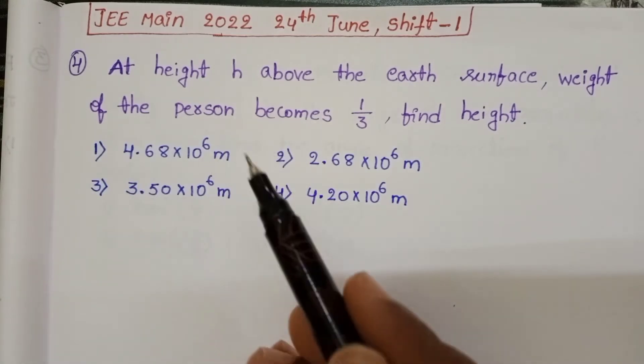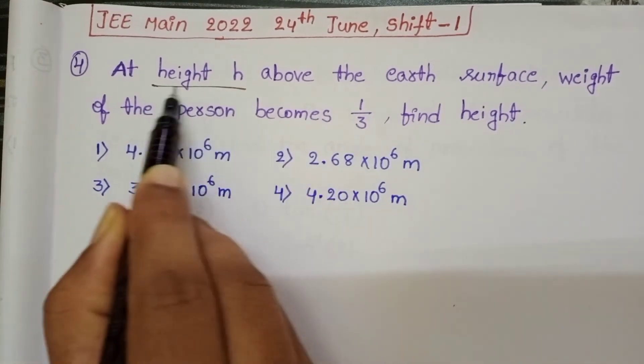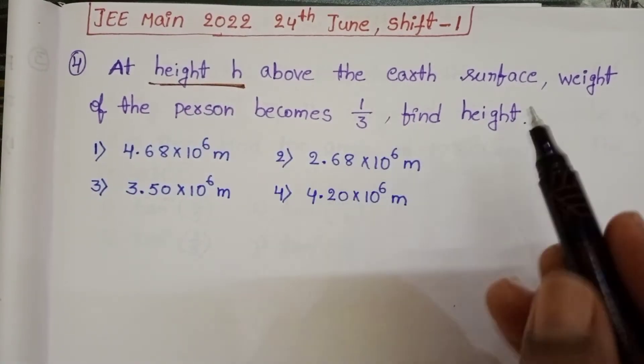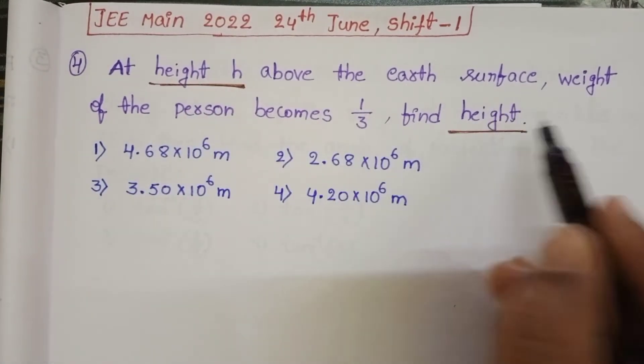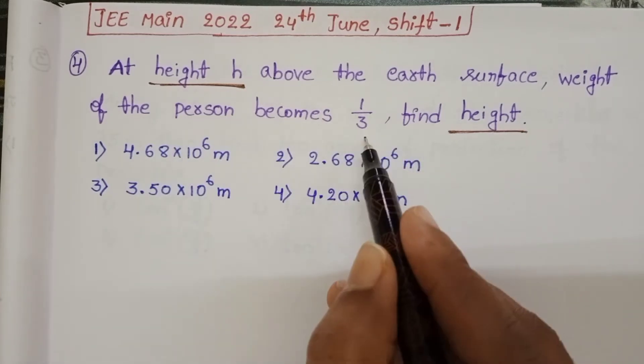weight of the person changes because of the height h. So we want to find out at what height the weight of the person becomes 1 by 3.